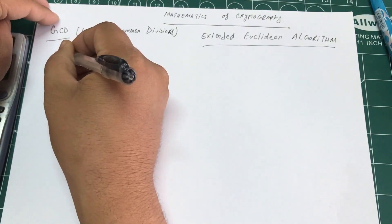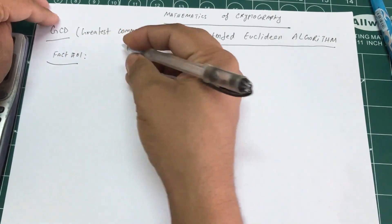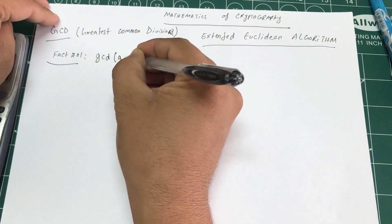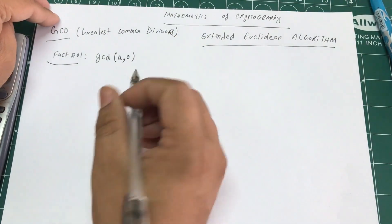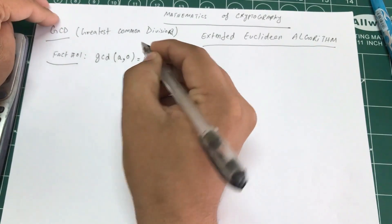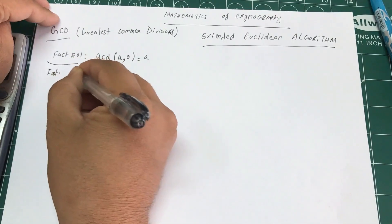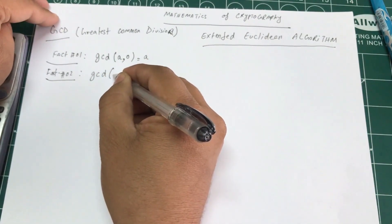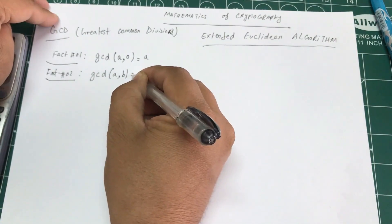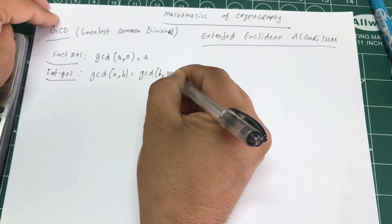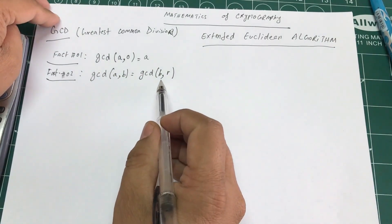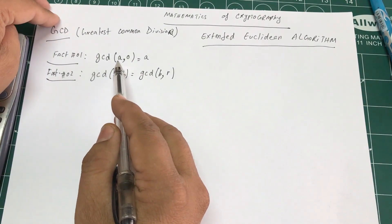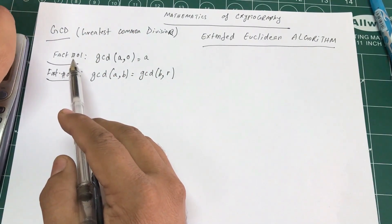Fact number one: the GCD of two integers where one is A and the other is zero equals A. Fact number two: the GCD of two numbers A and B equals the GCD of B and R, where R is the remainder of dividing A by B — and you continue until you reach the first condition.